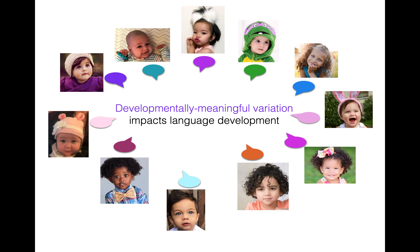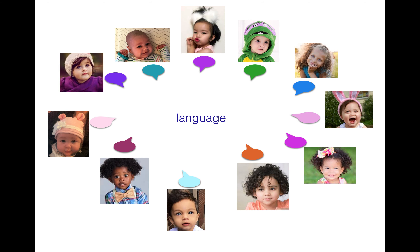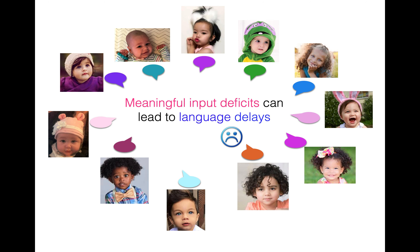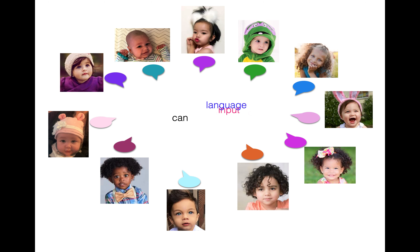But developmentally meaningful variation is different. Developmentally meaningful variation is variation that actually impacts language development in some substantial qualitative way. Meaningful input deficits — that is, differences, in particular a lack of some crucial information in the input — can lead to language delays, the delay of that language development, whatever type it might be.